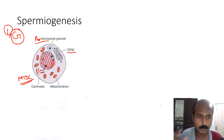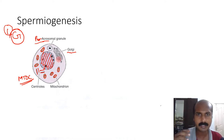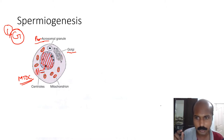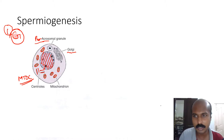Microtubules form the central skeleton of the flagellum. In the human cellular system, the only cell containing a flagellum is the spermatozoon. The microtubule organizing center is critical for forming the axonemal complex of the flagellum. Each organelle will undergo metamorphosis during spermiogenesis.